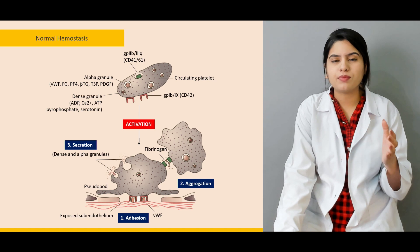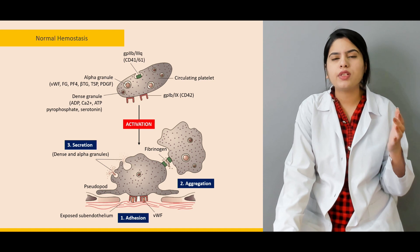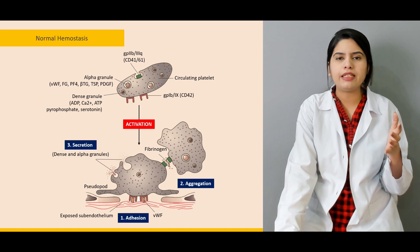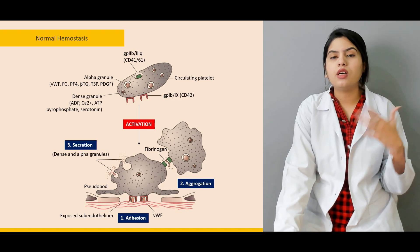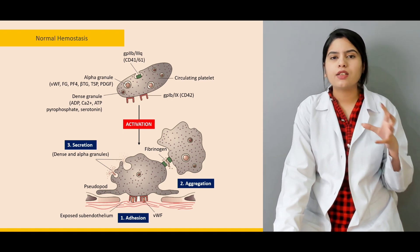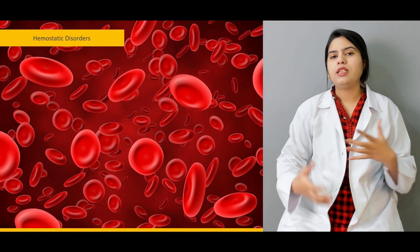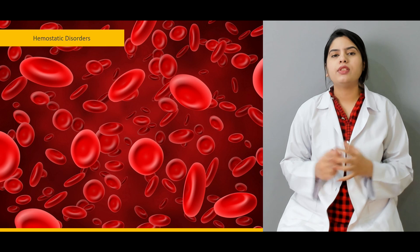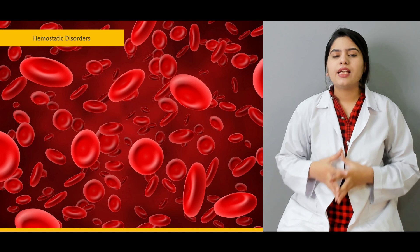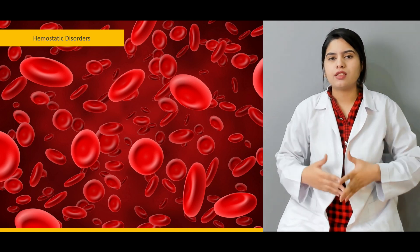First, we will discuss platelets, which are an important part of the hemostasis mechanism. We will see the different granules present and the basic mechanism of activation, aggregation, and secretion of platelets, and how they adhere to the endothelial surface. We will also discuss the different coagulation factors and the procoagulant and anticoagulant complexes.